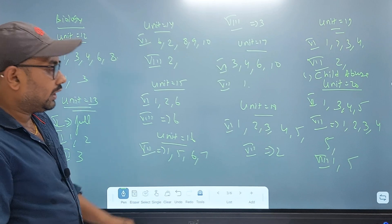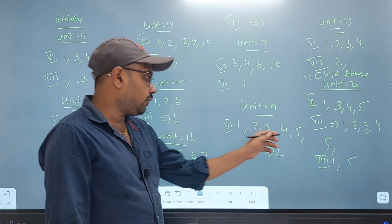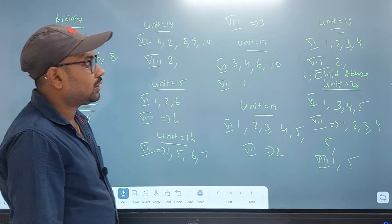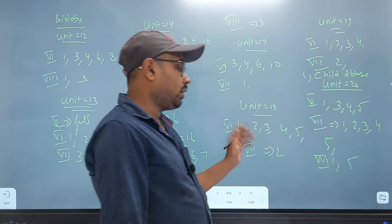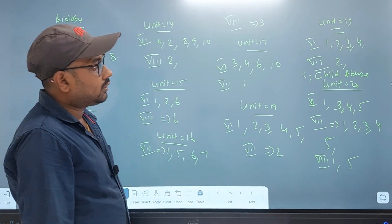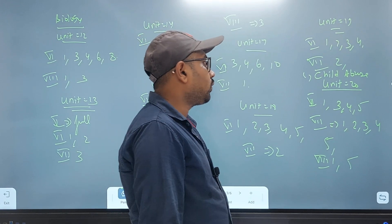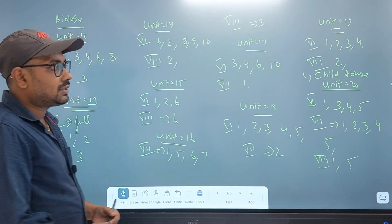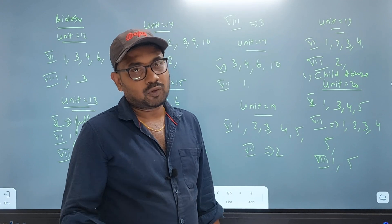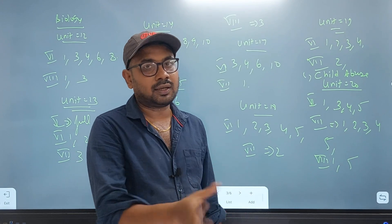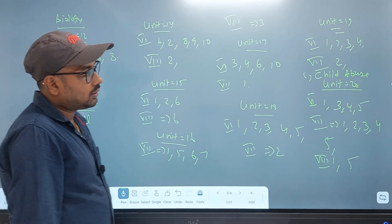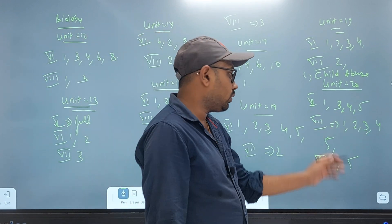In unit 18, we are going to study the question in the 18th. In unit 7, we are going to read the second question in Rome. In unit 19, there is a question in Rome. In unit 20, it is 1, 3, 4, 5 and in Rome.